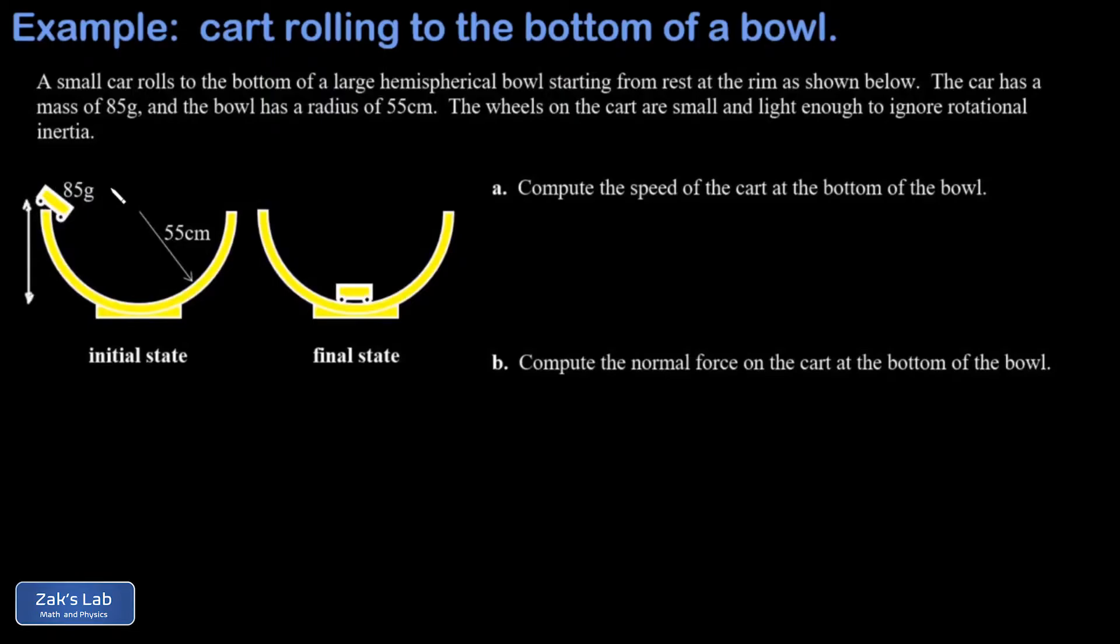If I look at the height change of the cart as it goes from the initial to final state, I'm going to call the lowest position y equals zero. Because this bowl has a radius of 55 centimeters, my starting position is a height of 55 centimeters or 0.55 meters.